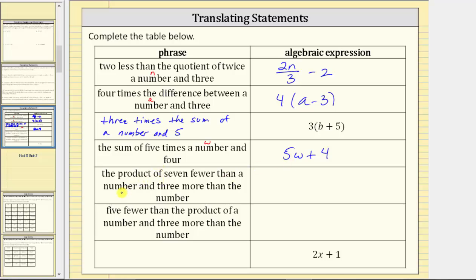The next phrase involves a product where we're multiplying two things, because it reads 'seven fewer than a number and three more than the number.' The number is the unknown variable p. One factor is seven fewer than a number, which is p minus seven. And then we multiply this by three more than the same number, which is p plus three. We have implied multiplication because we have two sets of parentheses next to each other, giving us the product of seven fewer than a number and three more than the number.